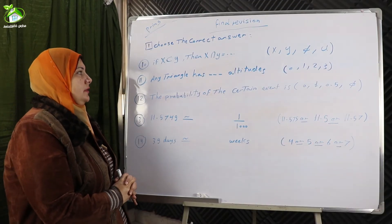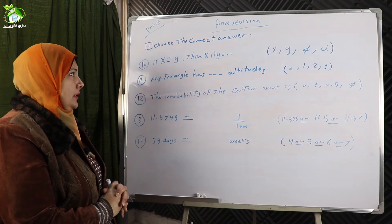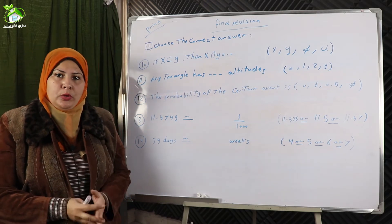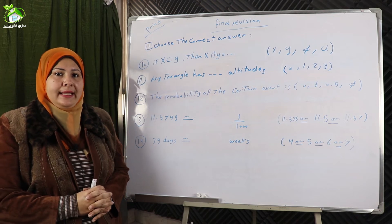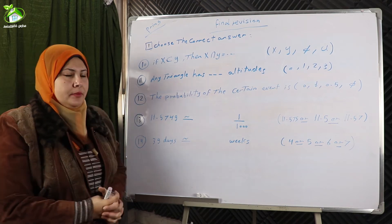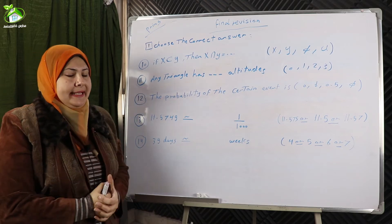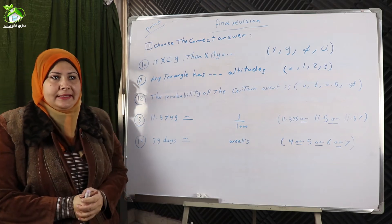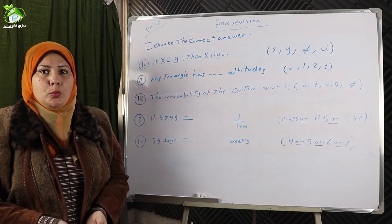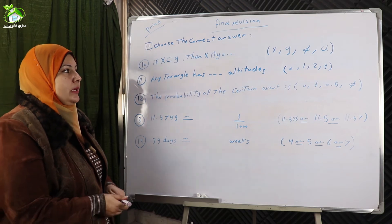Number ten: if x is a subset of y, then x intersect y equals what? Since x is a subset of y, it means x is inside y — x is the small set and y is the large set. The intersection between a small set and a big set equals the small set. So x intersect y equals x.